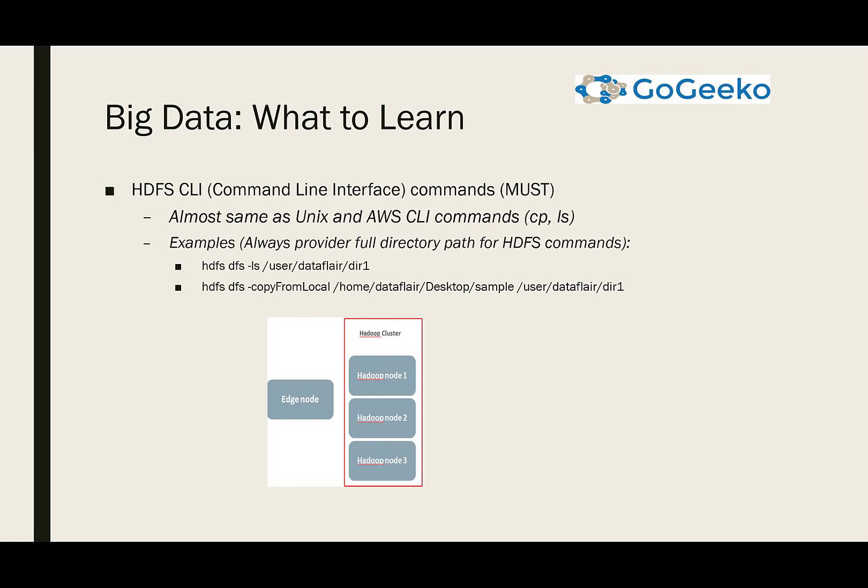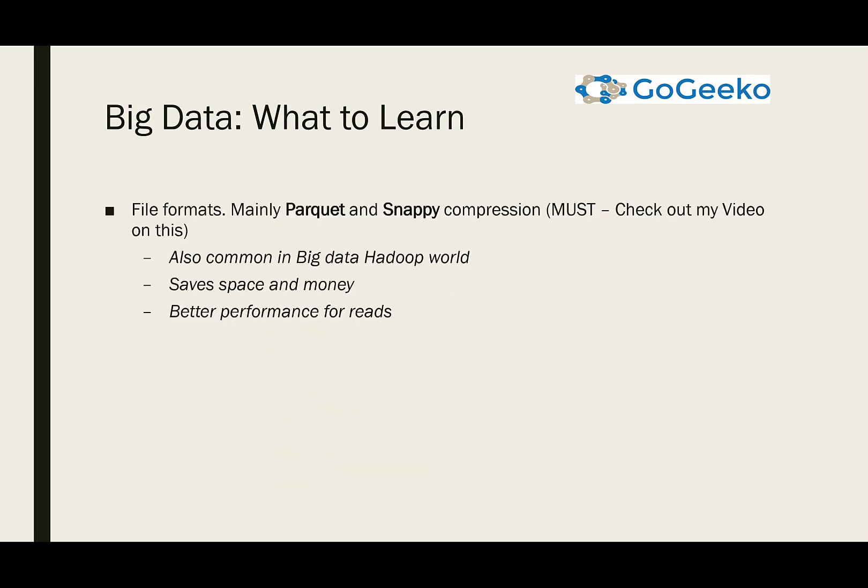Another thing covered in my previous video is Parquet and Snappy — these are very important to know in terms of cloud because in cloud you have cost associated with storage, and Parquet and Snappy compress your data. The same is true for Hadoop as well, and it gives better performance. You should know about it — just do a simple YouTube search on Parquet and Snappy and you'll find thousands of great videos.